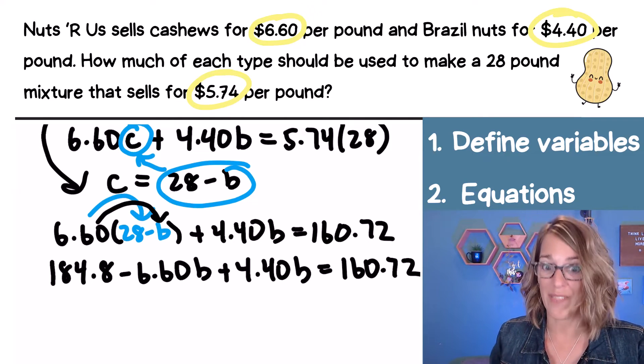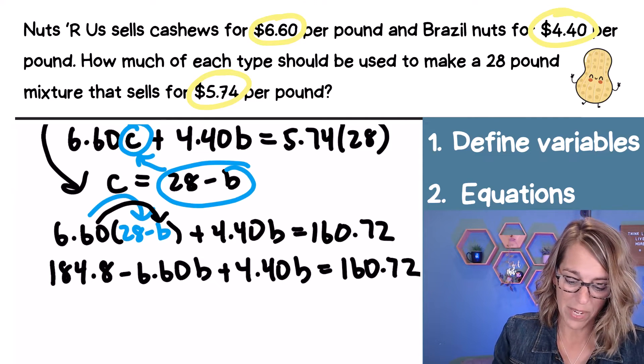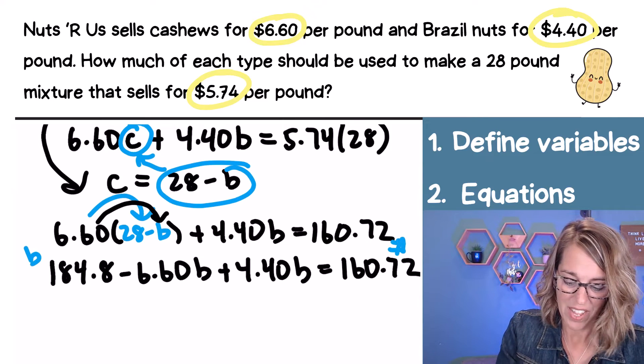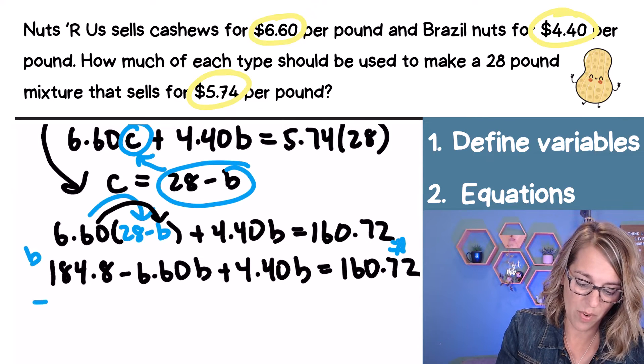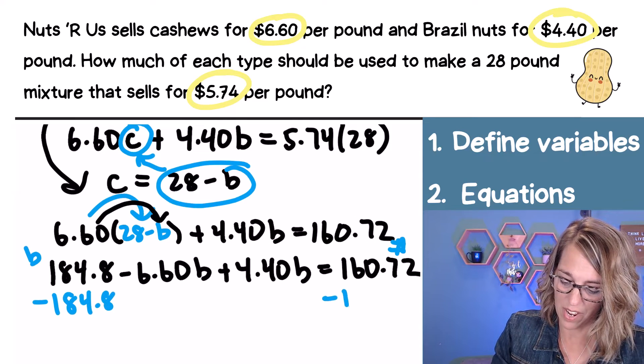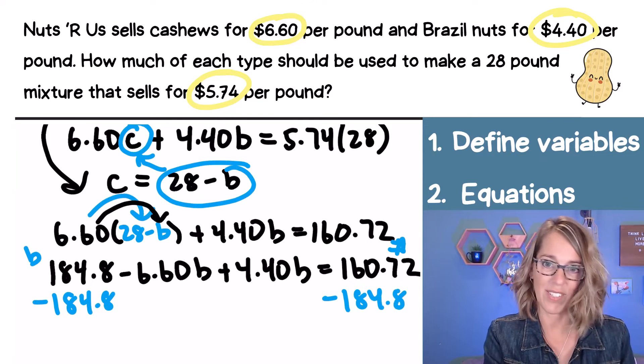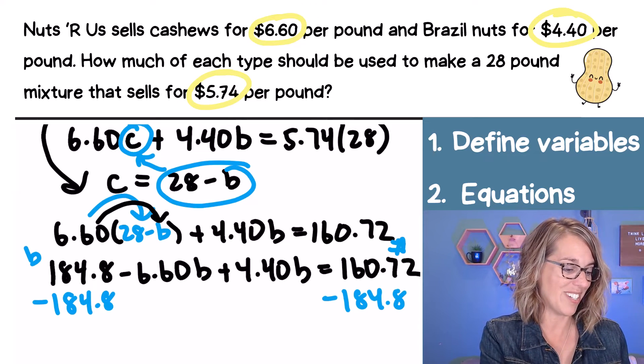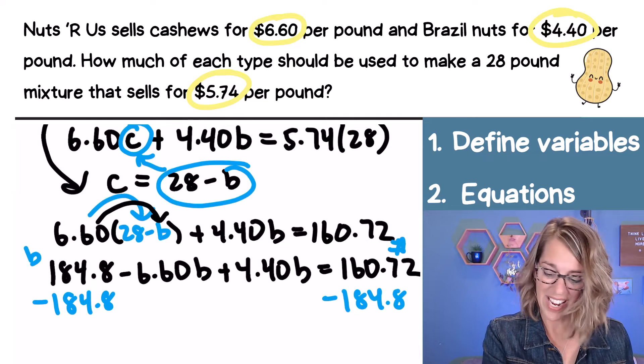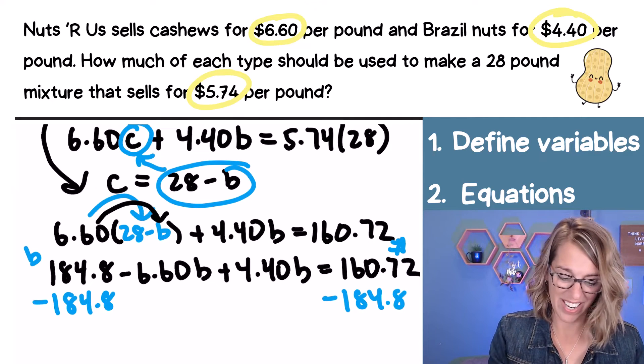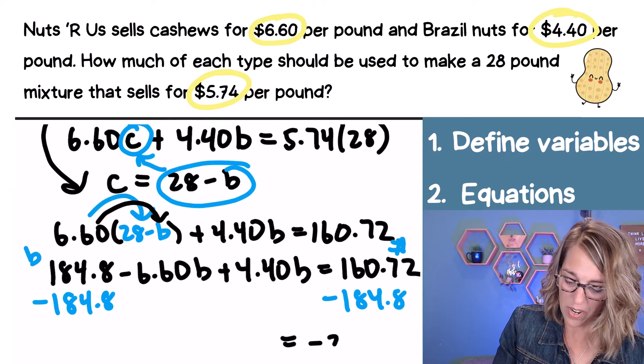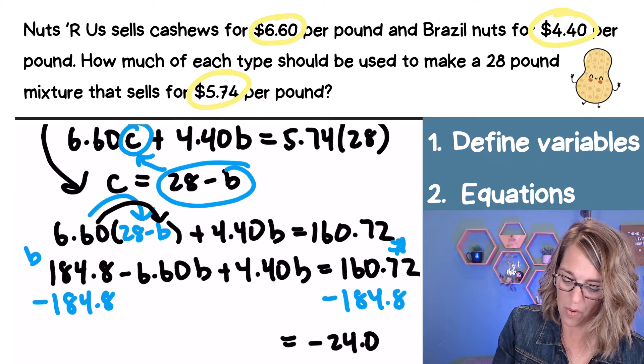So I want to get my B terms on one side and then my numbers on the other. That means I want to subtract the 184.8 minus 184.8. Thank goodness for calculators. So I'm going to do this 160.72 minus 184.8. And that gives me on the other side negative 24.08.